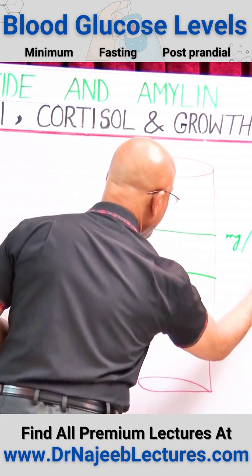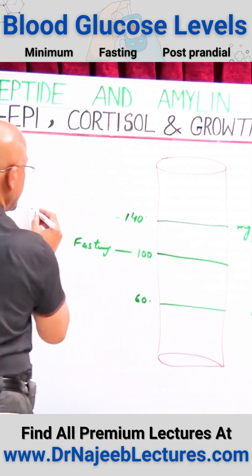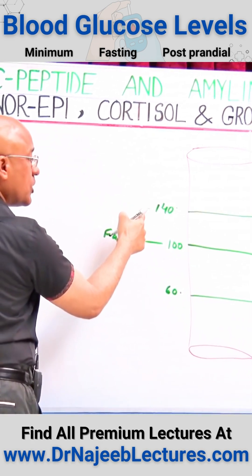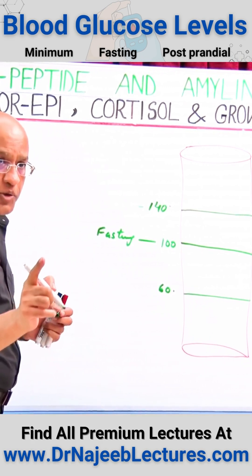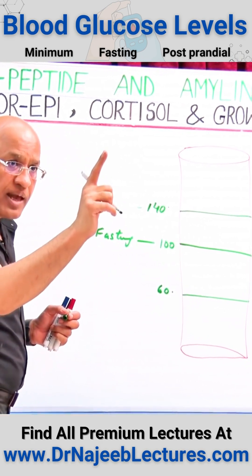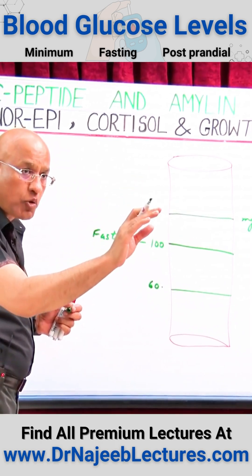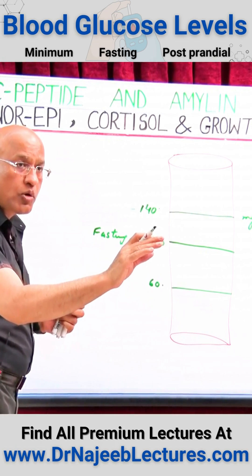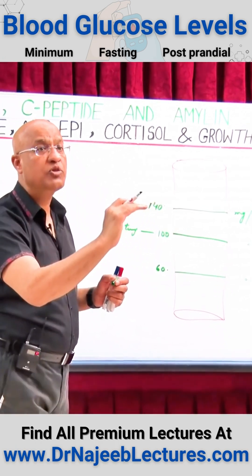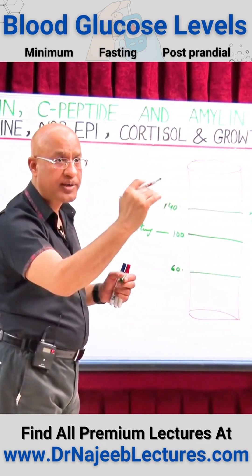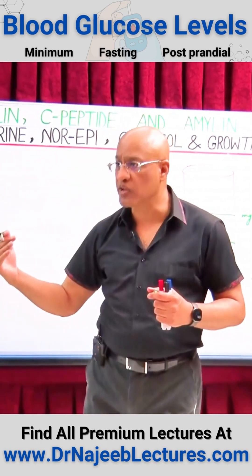Once you have taken food, blood sugar will start going up, and then insulin and other factors will come into play to control the blood sugar level. Blood glucose level should not produce a very strong spike in the blood, because if blood glucose level goes too high, it is very dangerous for us.